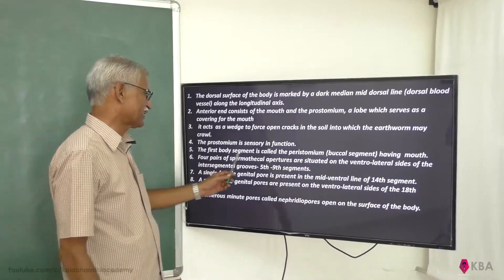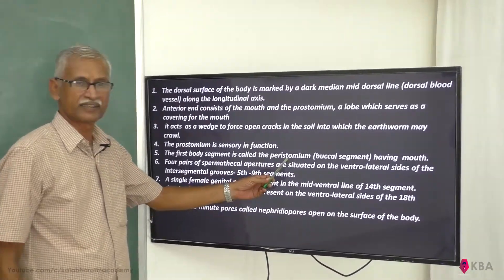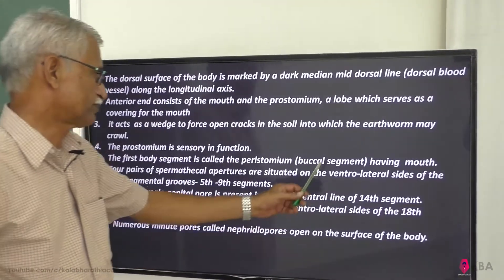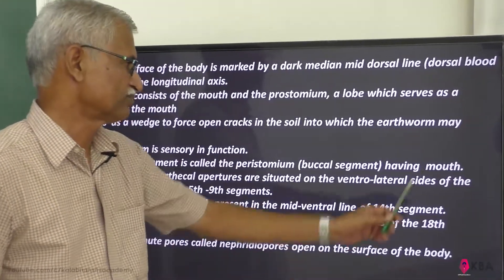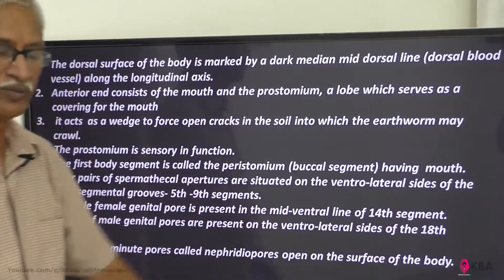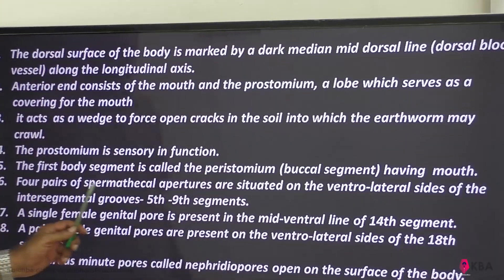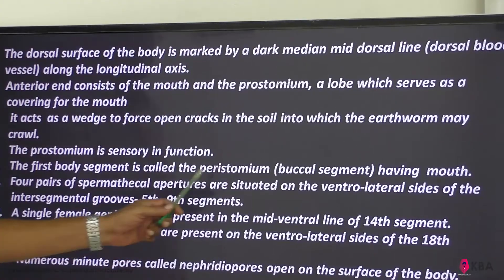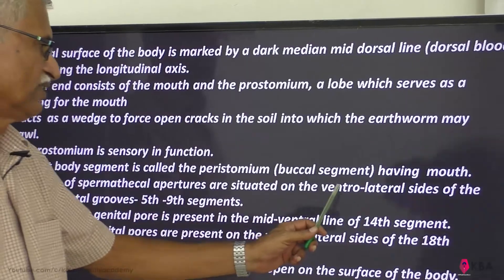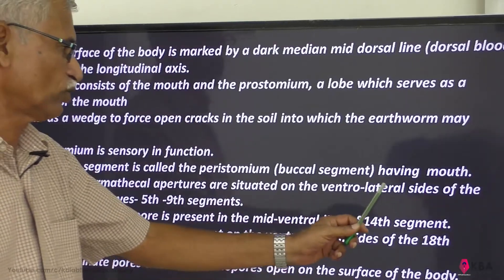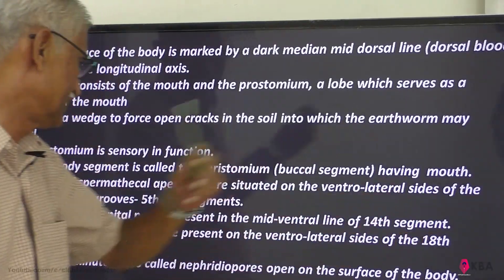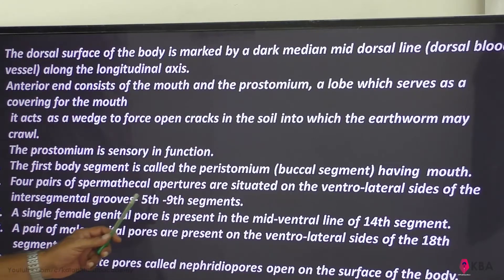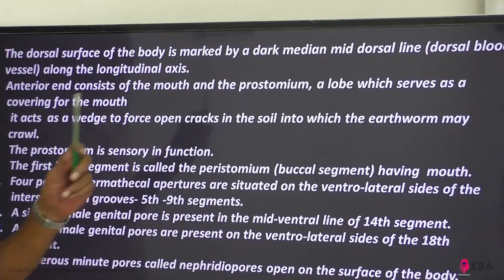The first body segment is called the peristomium — that is the buccal segment — having the mouth. There are four pairs of spermathecal apertures, situated on the ventrolateral sides of the intersegmental grooves of the 5th to 9th segments.